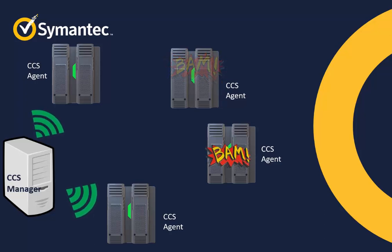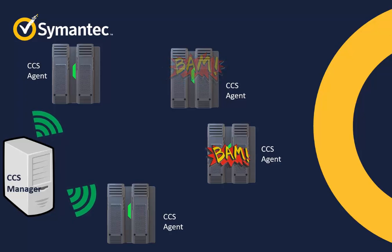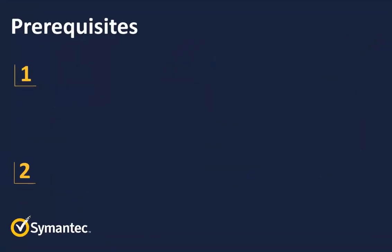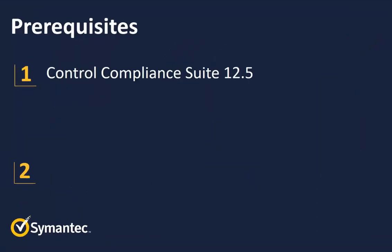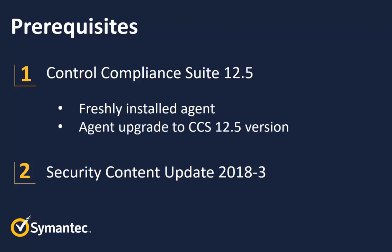Earlier it was impossible to collect data from an agent that didn't have connectivity with a CCS manager, but CCS 12.5 now supports offline data collection for Red Hat Enterprise Linux agents. To use the offline data collection feature you must have CCS 12.5 manager and agents and security content update 2018-3 installed. You can have a freshly installed 12.5 agent or an existing agent that you upgrade to 12.5.